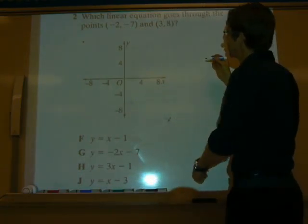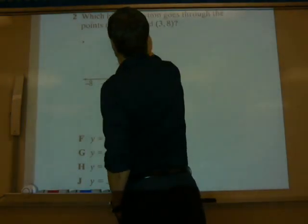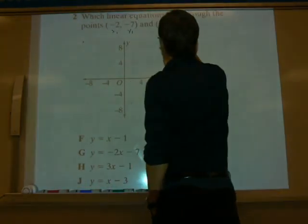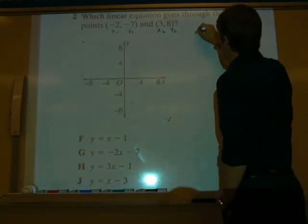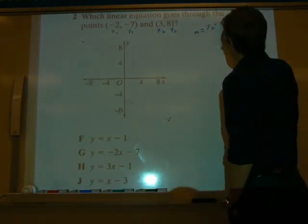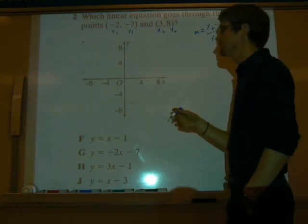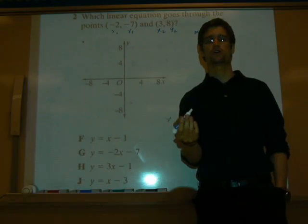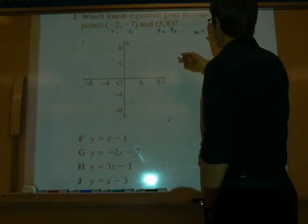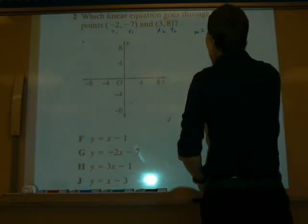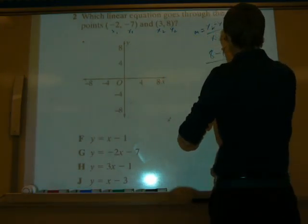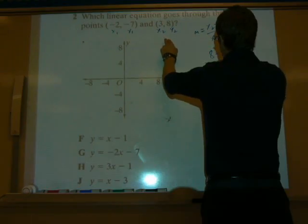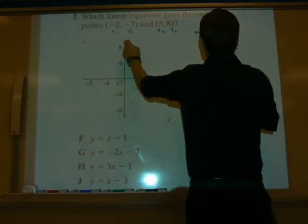To do that, first you need to figure out the slope. Remember, the slope is, we need to label this x1, y1, x2, y2. Now m is y2 minus y1 over x2 minus x1. Remember, you can find that on your formula chart.